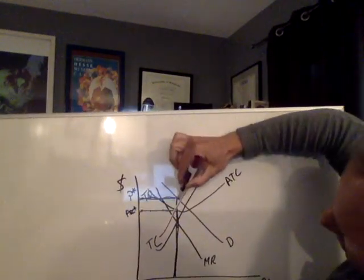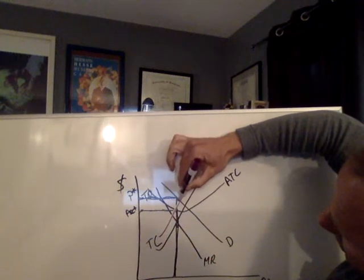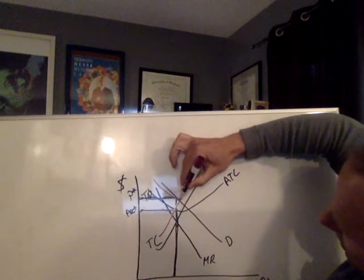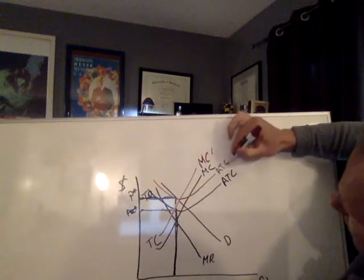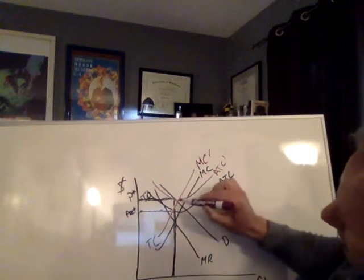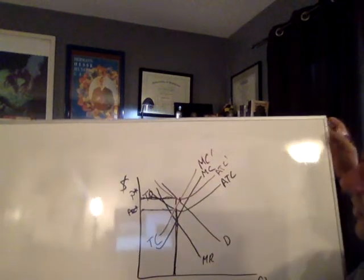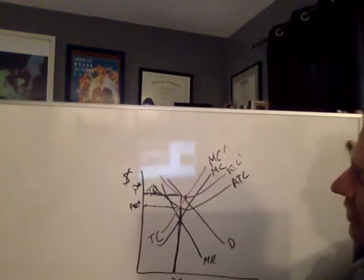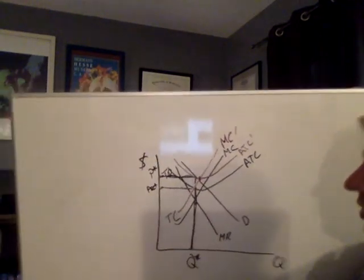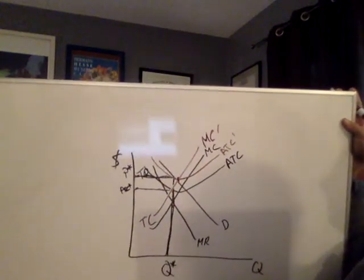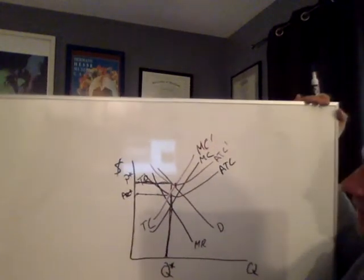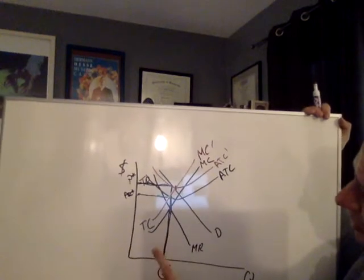Average total cost must also rise. Let's bring it to here. That's crossing at about the minimum of average total cost still, so we have done what the prompt asked us to do. We've increased marginal cost, which necessarily means we also increased average total cost.